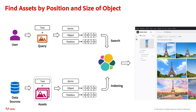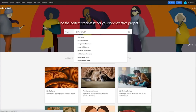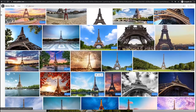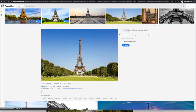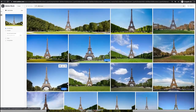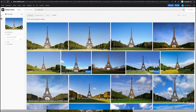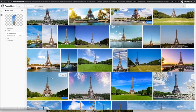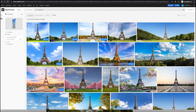We've used embedding search for the Find Assets by Position and Size feature in Adobe Stock. This search is based on text, embeddings, image objects, and object location. Objects and their location in an image are represented as embeddings in Elasticsearch. When a user selects an object in the UI, we convert the selected object and location to embeddings and perform an embedding search. Let's see this feature in action. The user searches for images of the Eiffel Tower. When they find one they like with a blue sky background, they click Find Similar. Then, using the UI widget that identifies objects, they click on the Eiffel Tower to isolate it in the center, and the results return images of the Eiffel Tower in the center.